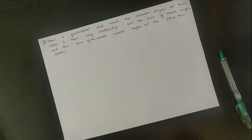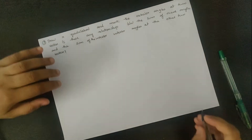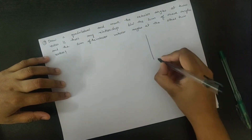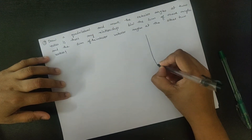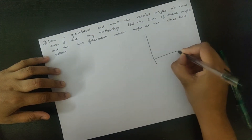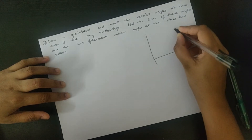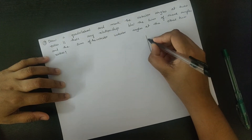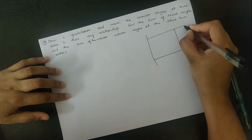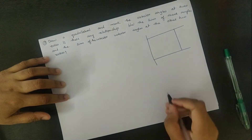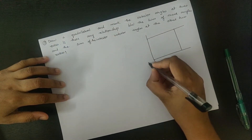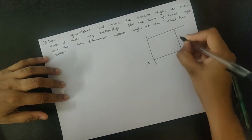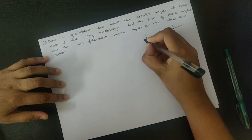Okay. This is the quadrilateral with vertices named A, B, C, D.